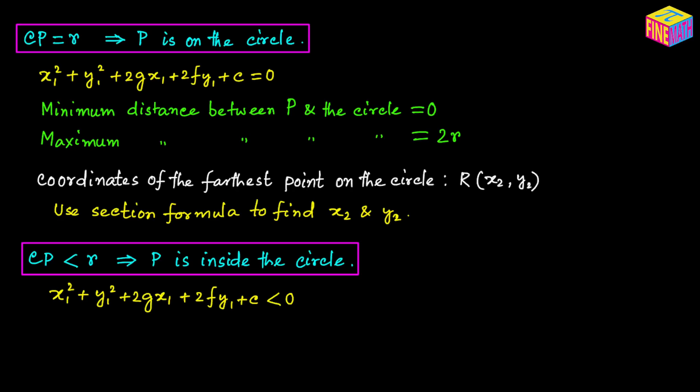So this is the necessary condition for point P to be inside the circle. If we plug the coordinates of P into the left-hand side of the general equation and the value is negative (less than 0), then we can conclude that P is inside the circle.